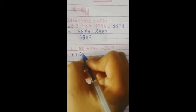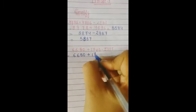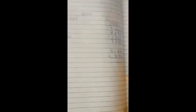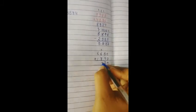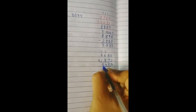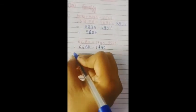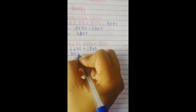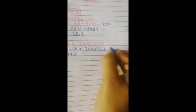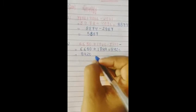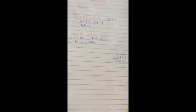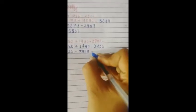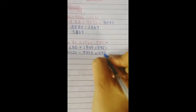Now part b: add the numbers with plus sign — 6680 plus 1740. In rough: 0 plus 0 is 0; 8 plus 4 is 12, carry 1; 6 plus 1 is 7, 7 plus 7 is 14, carry 1; 6 plus 1 is 7, 7 plus 1 is 8. So the sum is 8420. Now subtract: 8420 minus 3995. The answer is 4425.